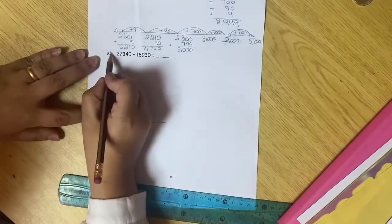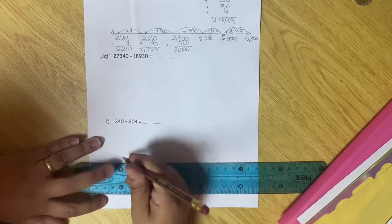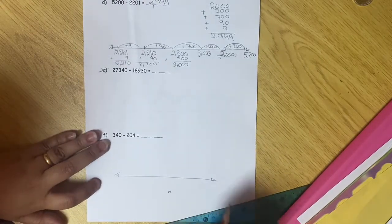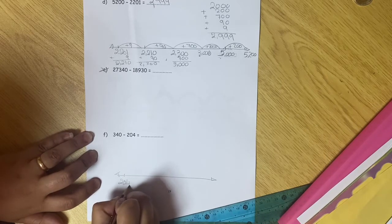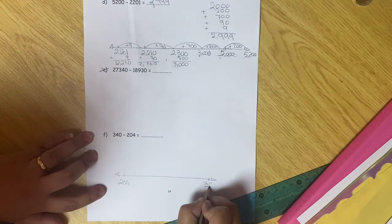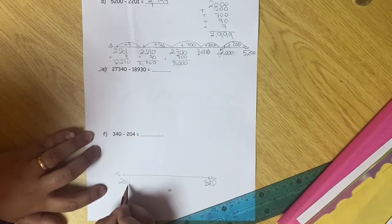Letter F. I will draw my number line. And I will put the two numbers on the number line. The smaller one at the beginning and the bigger one at the end. Then, I will look to the ones. I have 4.